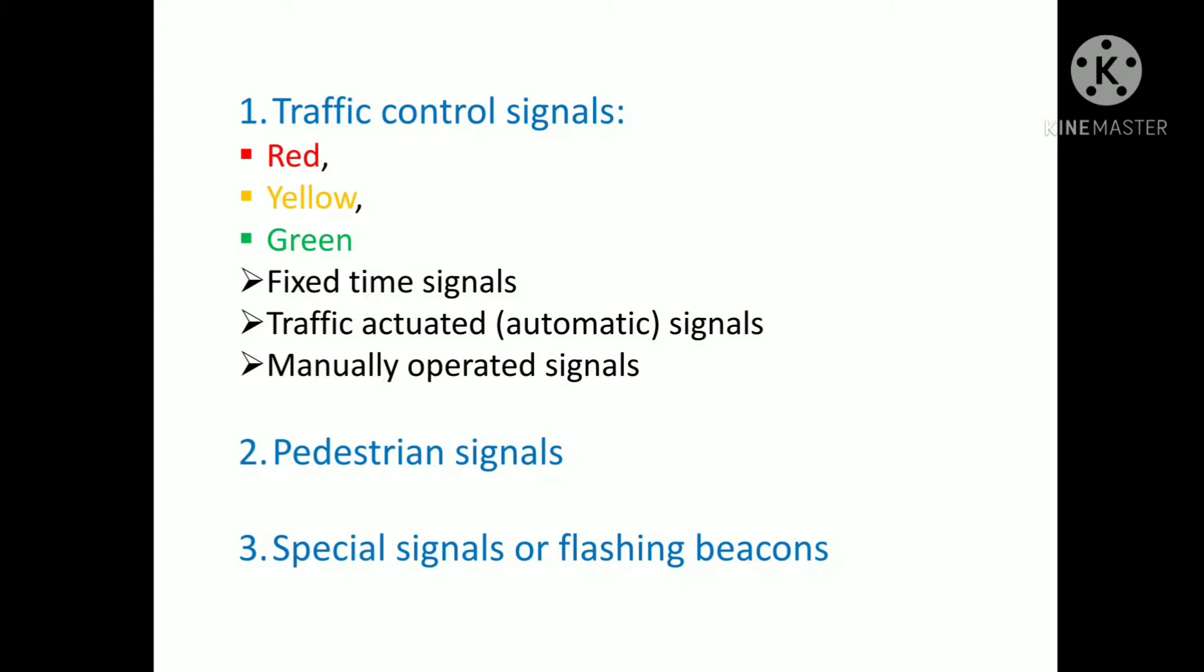Green light indicates go. The typical traffic control signal shows the arrangement of three light glows. Traffic control signals are further classified into three types.